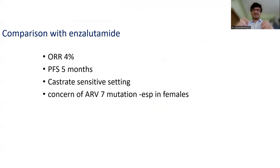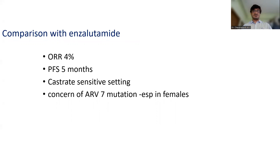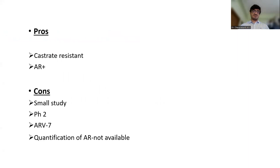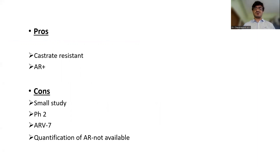If you compare with enzalutamide, which is an anti-androgen, this has been used mainly in the castrate sensitive setting. The overall response rate is around 4% and the progression-free interval was five months. The responses are not as great as abiraterone, but PFS is five months and it is being used in a castrate sensitive setting. In salivary gland cancer, there is a concern — especially in females — of the ARV7 mutation, which is an androgen receptor mutation not sensitive to antiandrogens. This was a good study specifically addressing castrate resistant AR-expressing salivary gland cancers. The cons are that it is a small phase 2 study, it did not look at ARV7 mutation status, and quantification of AR was not available.